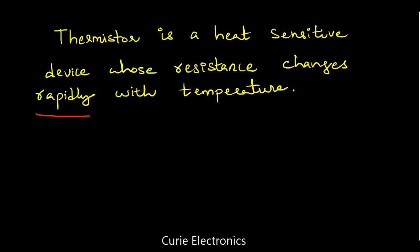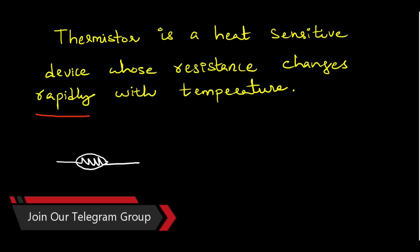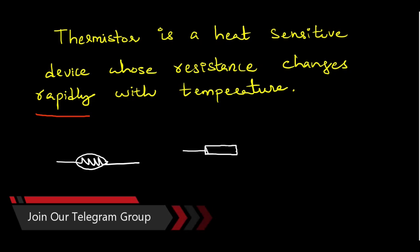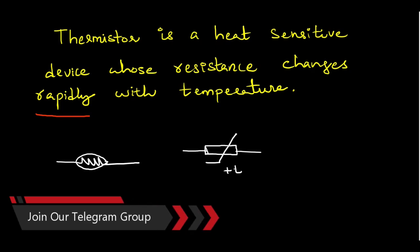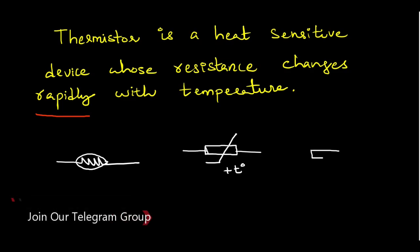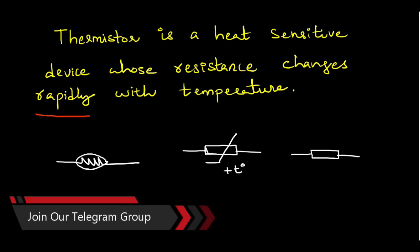This thermistor has got different symbols. This is one symbol for a thermistor, or we can represent the thermistor like a variable resistor. Here we can mention whether it is a PTC, that is positive temperature coefficient thermistor, or NTC, negative temperature coefficient. If it is marked with plus T degrees, it is a positive temperature coefficient thermistor. For NTC, we write minus T degrees.